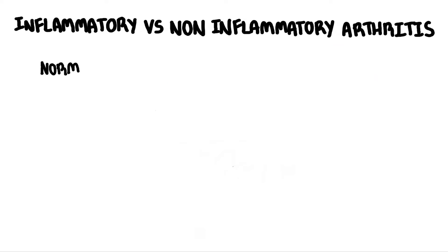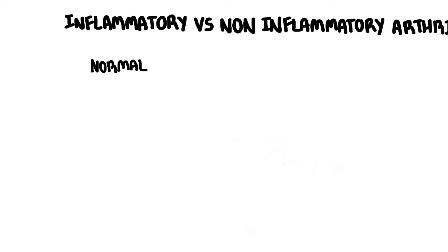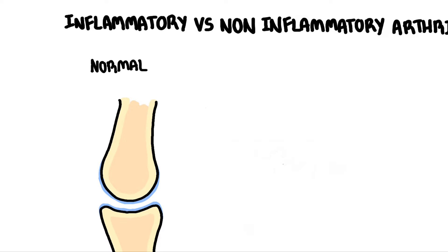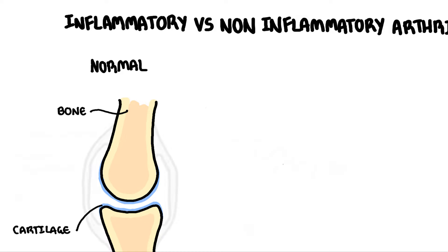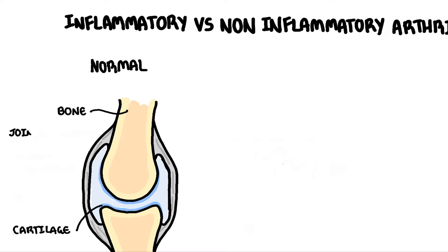Let us review a normal synovial joint, which is the most common type of joint found in the human body. An example of a synovial joint is the knee. The synovial joint consists of two bones, and the articulating surface of the joint contains cartilage. The joint has a capsule — this surrounding structure — consisting of an outer fibrous part and an inner synovial layer called the synovial membrane.